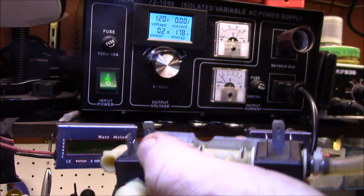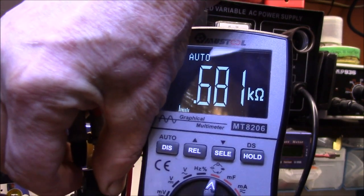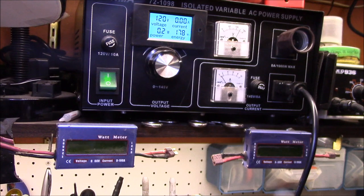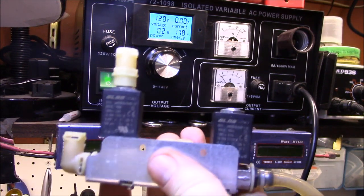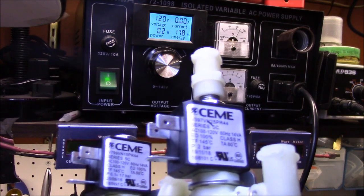But the solenoid coils I believe are all the same here. These come out around 680 ohms on the coils, and they're listed at 10.5 volt-amps at 120 volts.